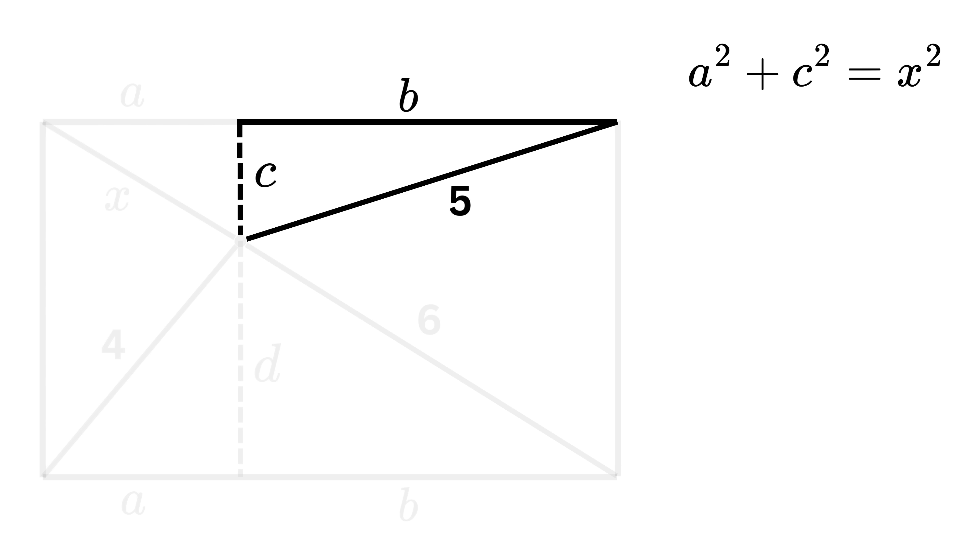Now, consider this top right right triangle. Here, the two sides are B and C, and the hypotenuse is 5. So, we write B square plus C square is equal to 5 square.